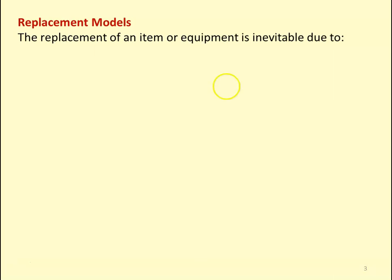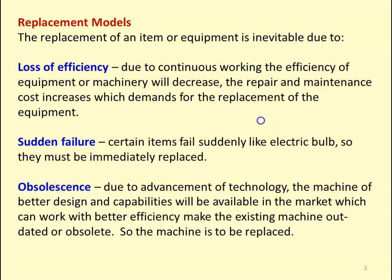Replacement of an item or equipment is inevitable due to three reasons. The first is loss of efficiency. In an industrial scenario, due to continuous working, the efficiency of equipment or machinery will decrease. Repair and maintenance cost will increase with demand for the replacement of equipment. In machines like generators, motors, turbines, and pumps, due to continuous working, the efficiency will decrease. We continuously repair and maintain the equipment, and as the years go, the cost of repair and maintenance will increase. So at one point of time, we have to replace the equipment due to low efficiency.